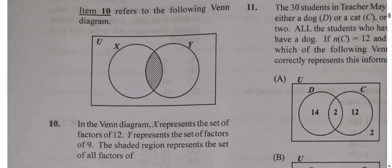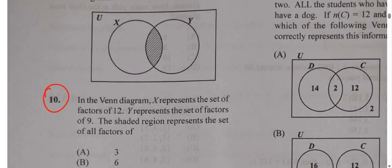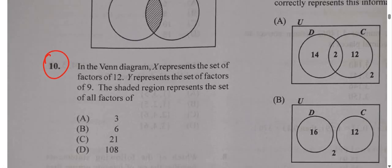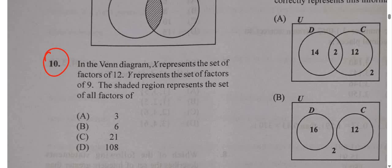Alright, so we're looking at question 10, referring to the Venn diagram that we've seen here. So let's read question 10. In the Venn diagram, X represents the set of factors of 12, and Y represents the set of factors of 9. The shaded region represents the set of all factors of which one of those numbers: 3, 6, 21, or 108.